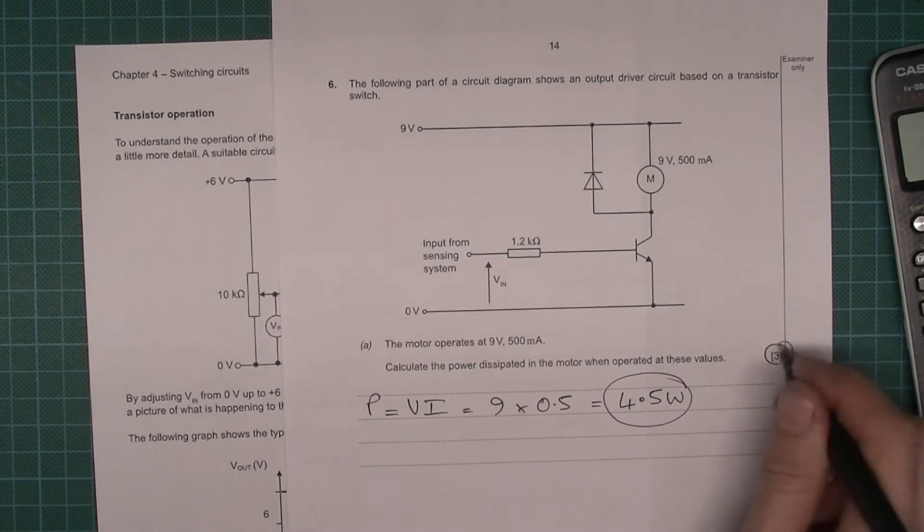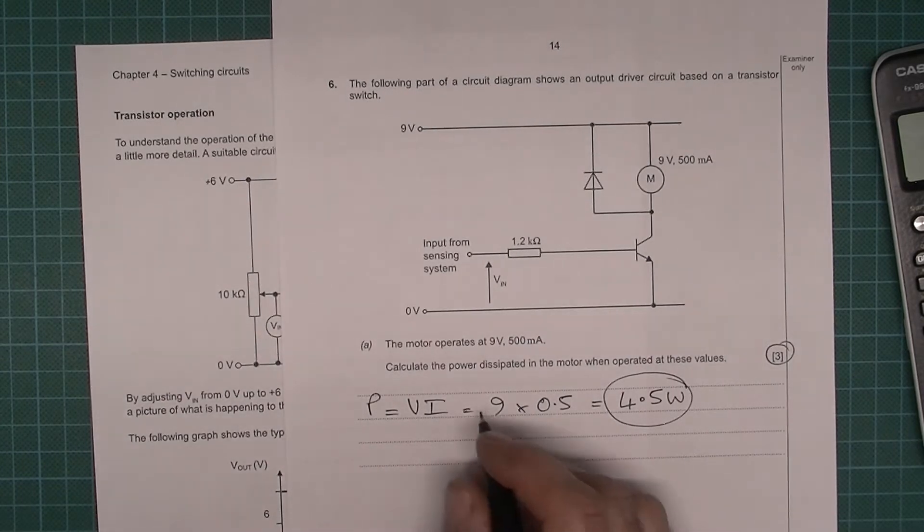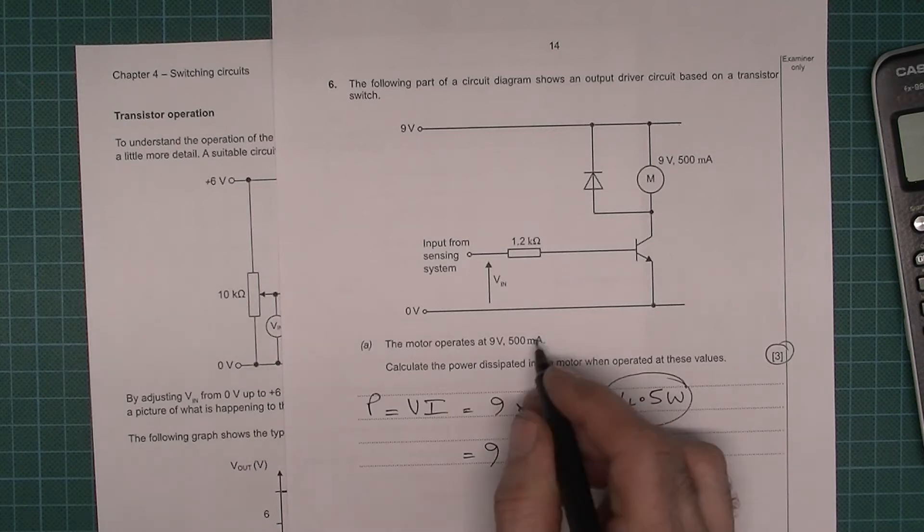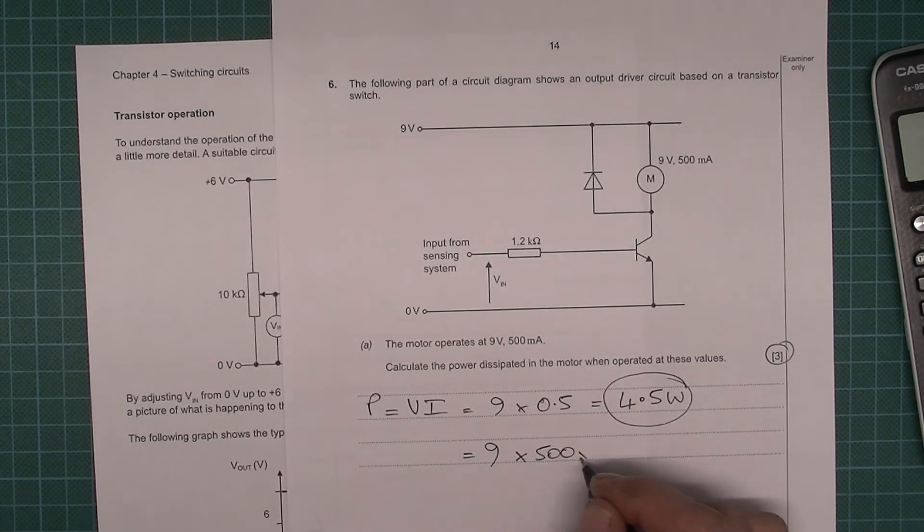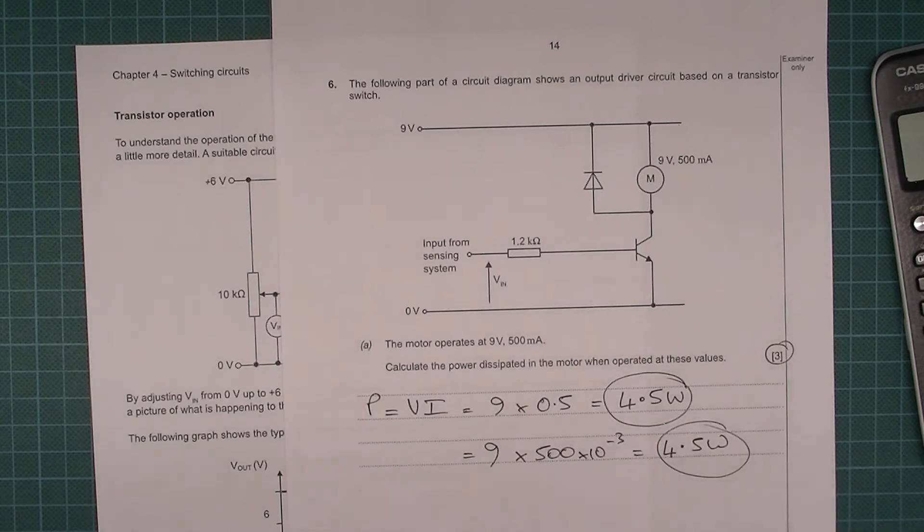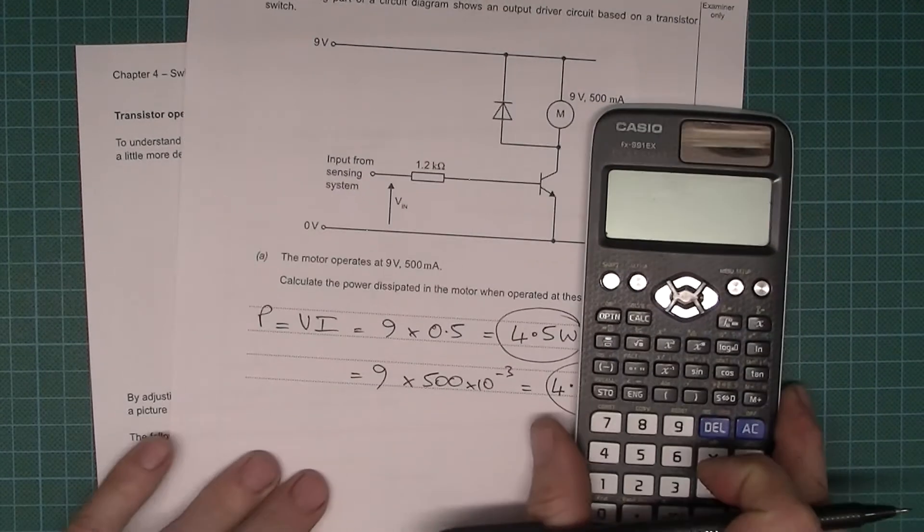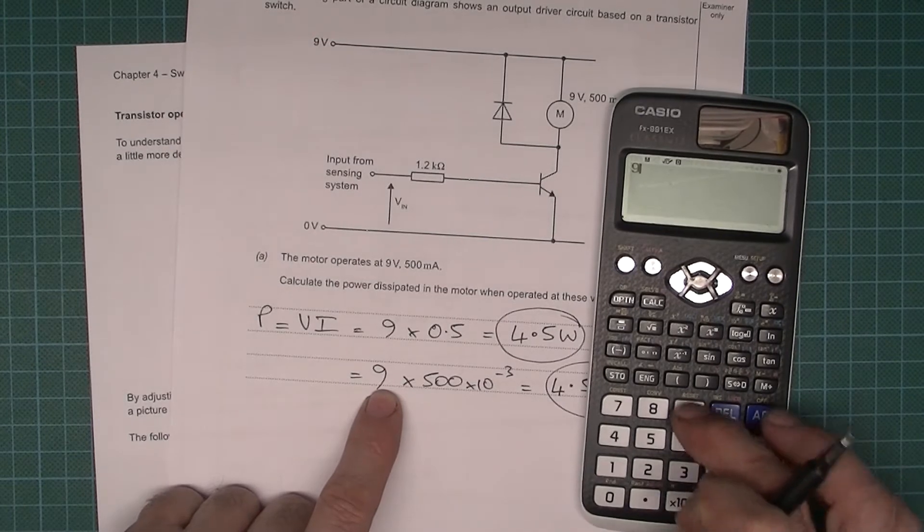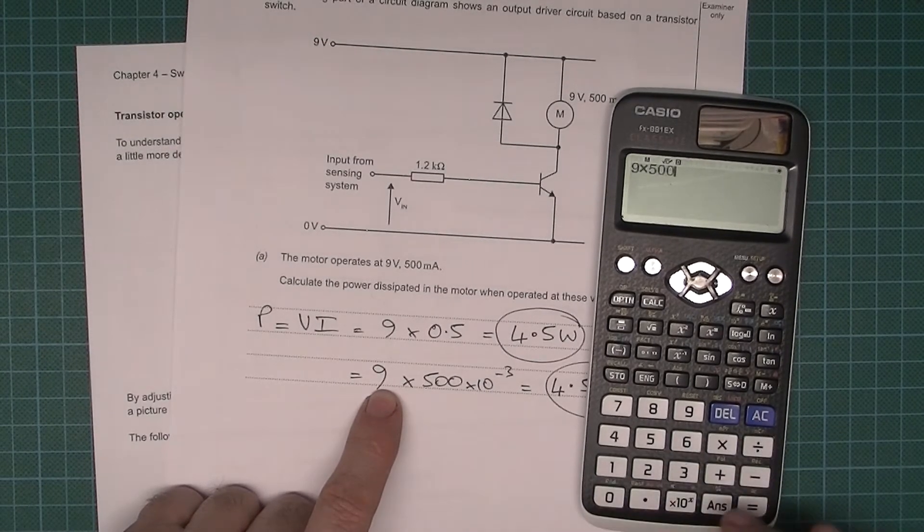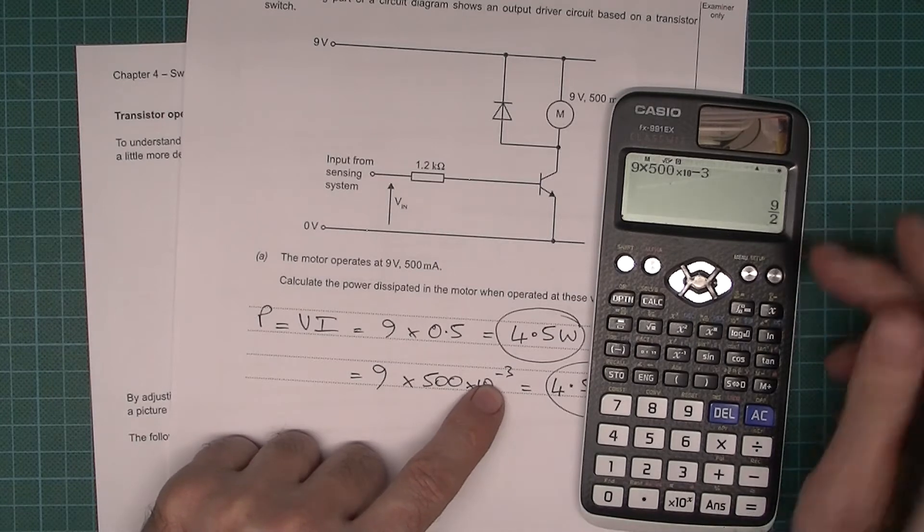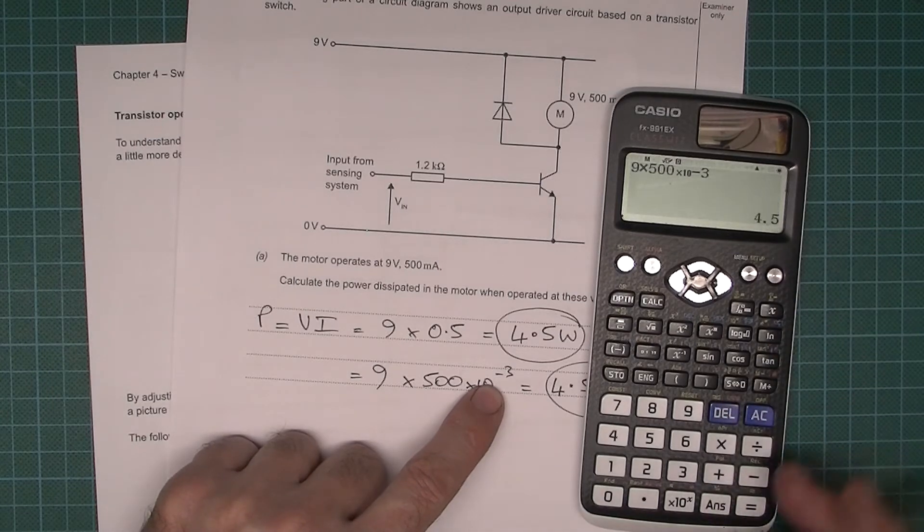Amazingly, that's worth 3 marks. If you prefer, you could write 9 volts times 500, because I did say 500 times 10 to the minus 3, but that's still going to give you 4.5 watts. If you wanted to do that on the calculator for any reason, I'll just quickly show you how. So you can do 9 times 500 times 10 to the minus 3 and it gives you that fraction and then 4.5.